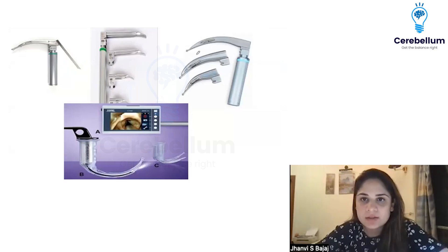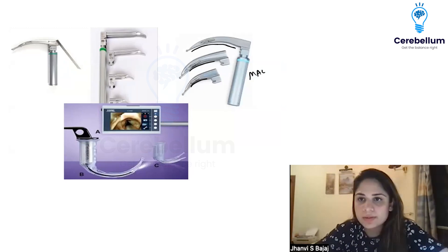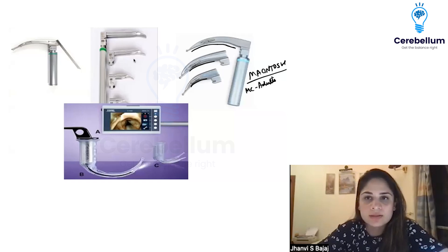You should know the different types of laryngoscopes and how to identify them. The most commonly used one is this curved blade laryngoscope, called the Macintosh laryngoscope. It is the most commonly used one in adults.